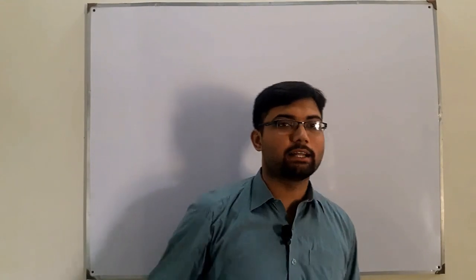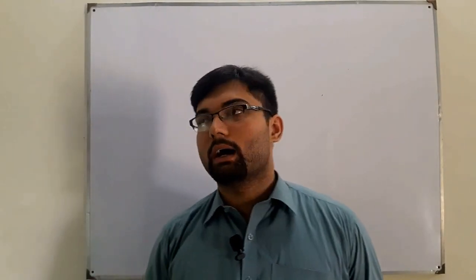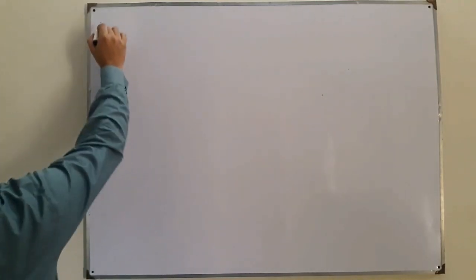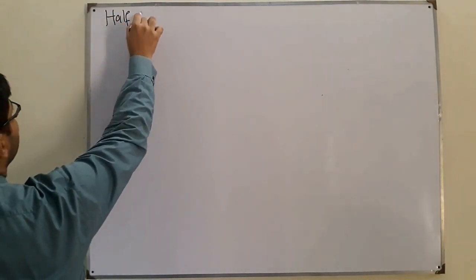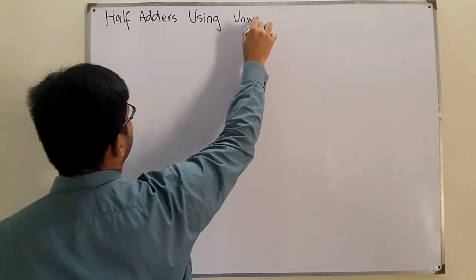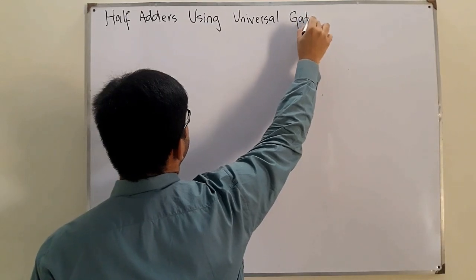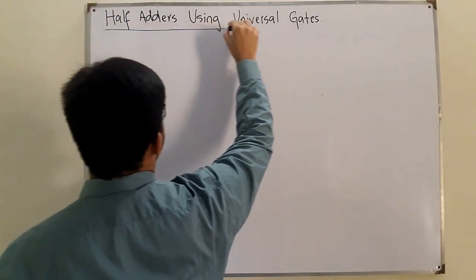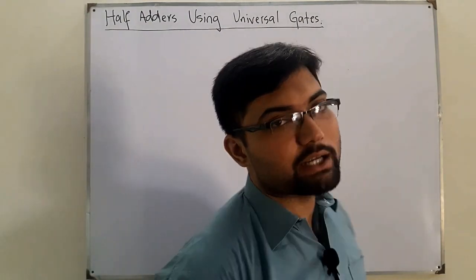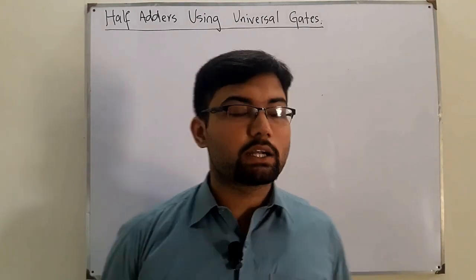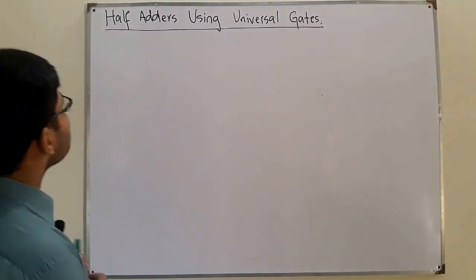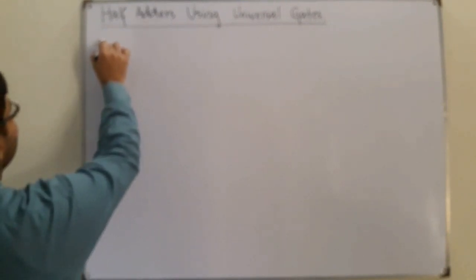Assalamualaikum, Salah Khan here. Today we discuss the adders using universal gates. The first adder we discuss in this video is the half adder using universal gates. Now, universal gates are the NAND gate and the NOR gate. We've seen that any logic circuit can be implemented with the help of them, which is why they're called universal. Therefore we can also implement these adders with them. First, let's do the half adder using only NAND gates.